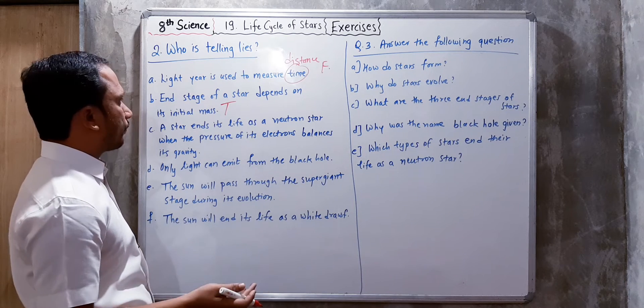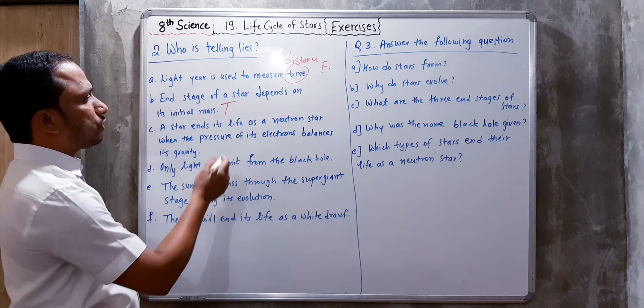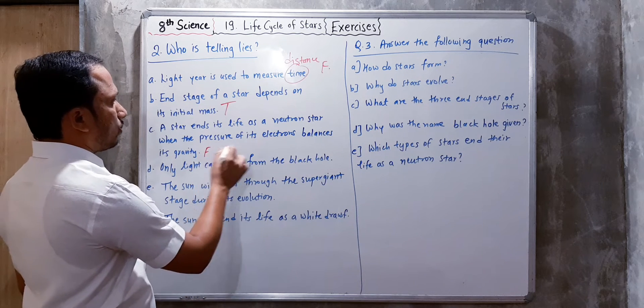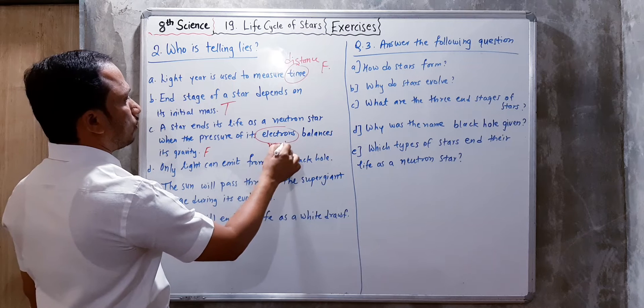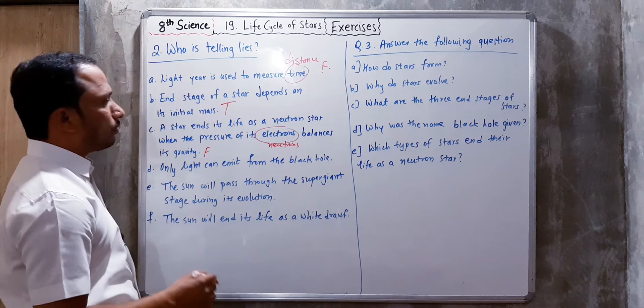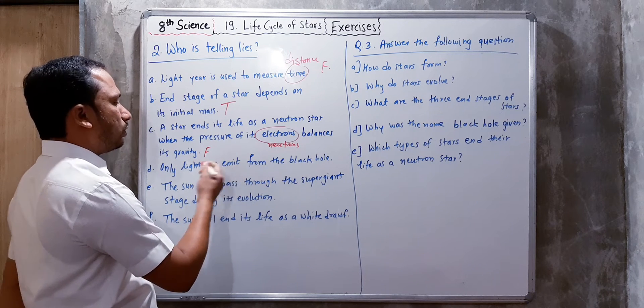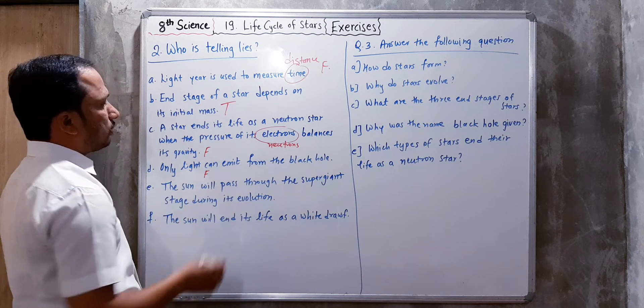A star ends its life as a neutron star when the pressure of its electrons balances its gravity - this is false because it's when the pressure of its neutrons balances gravity. Only light can emit from the black hole - this is false because even light cannot be emitted from a black hole.